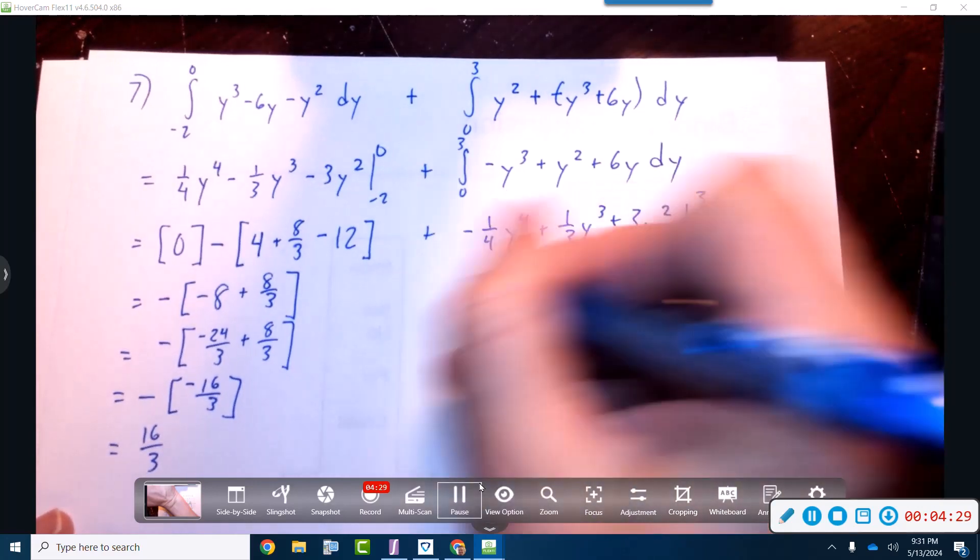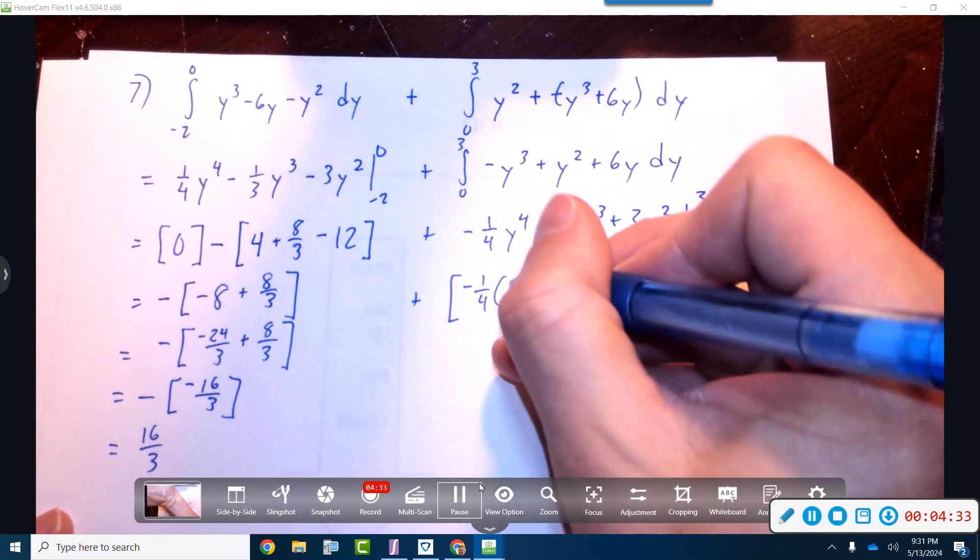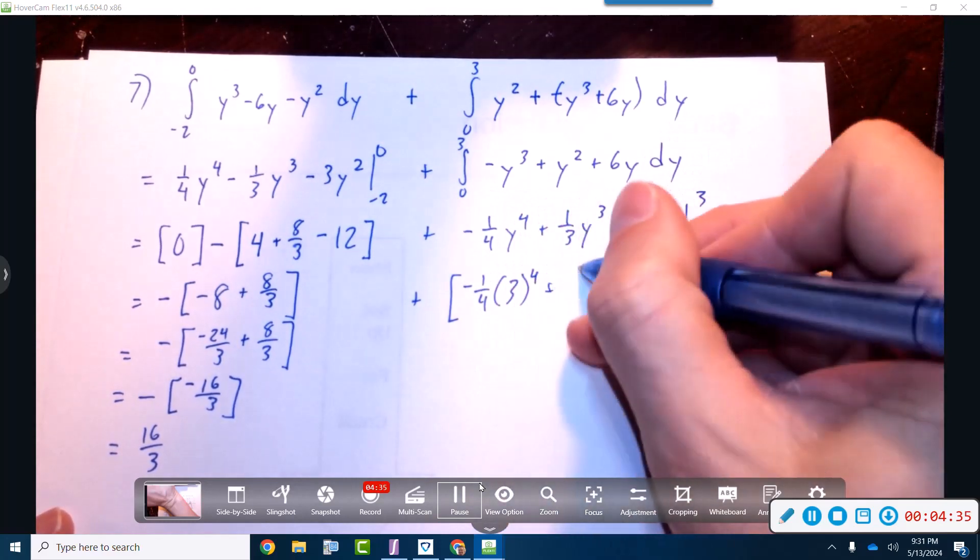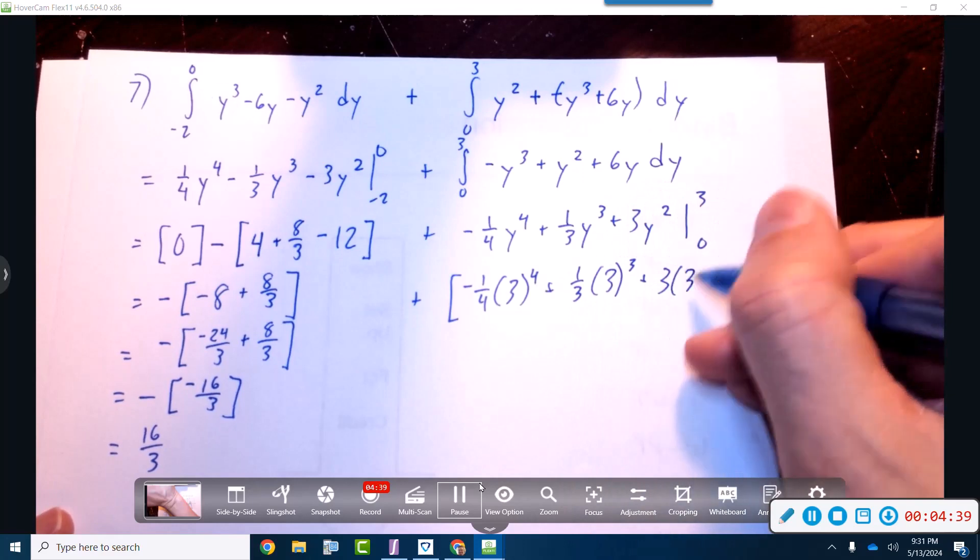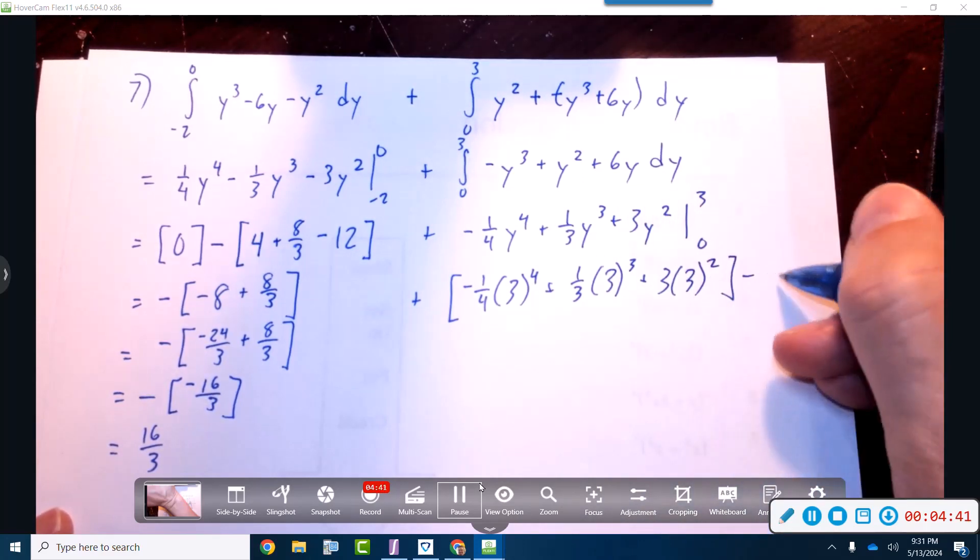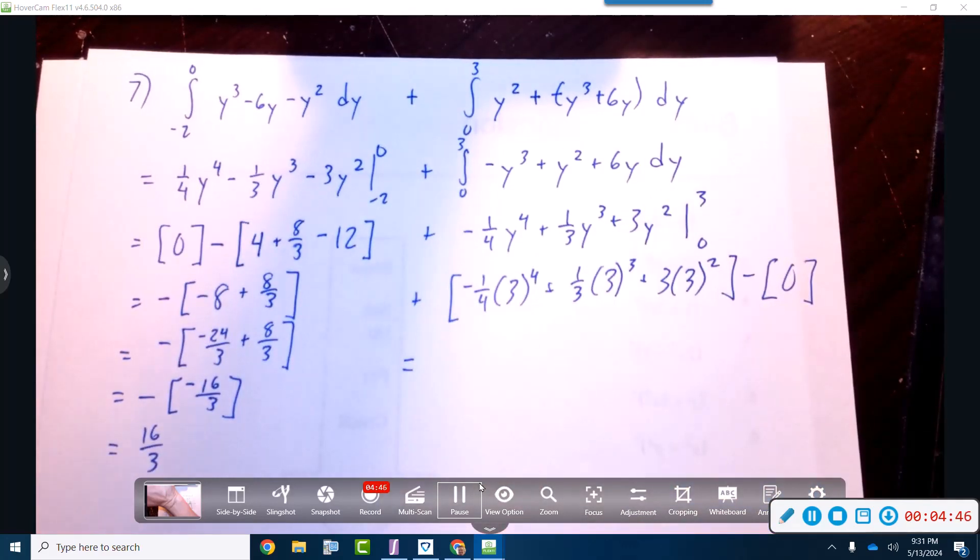We will actually just do three. So negative one fourth, three to the fourth power, plus one third, three to the third power, plus three times three to the second power, subtracting that big old goose egg. And we are good. So if I do this carefully, punch it into the calculator.